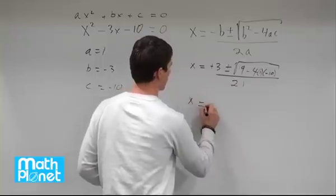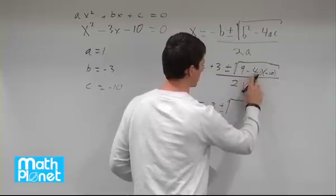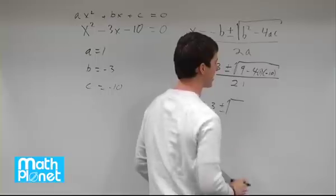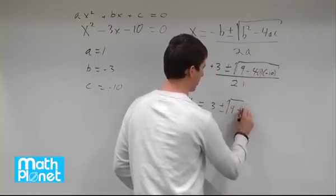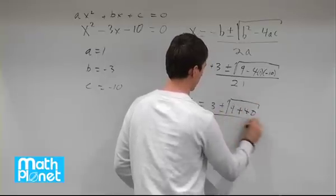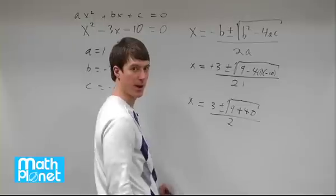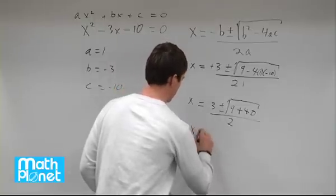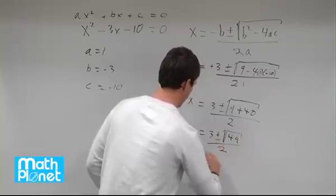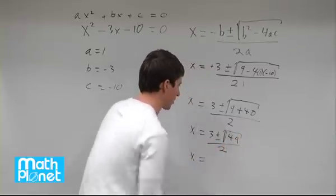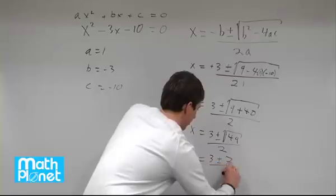We have x equals 3 plus or minus the square root of—now what do we have under here? We had 4 times 1 is just 4, 4 times negative 10 is negative 40, and then we have two negatives, so that comes out to be positive, so 9 plus 40, all over 2. So a little bit further to simplify underneath the square root: x equals 3 plus or minus the square root of 49 over 2. And finally we can take the square root of 49, which is 7, so 3 plus or minus 7 all over 2.